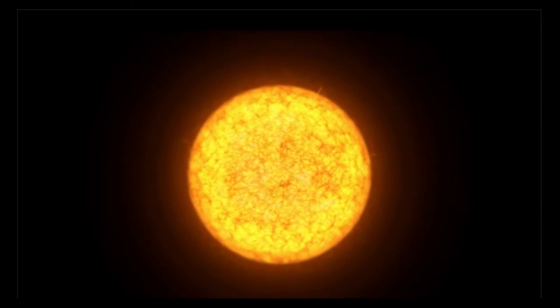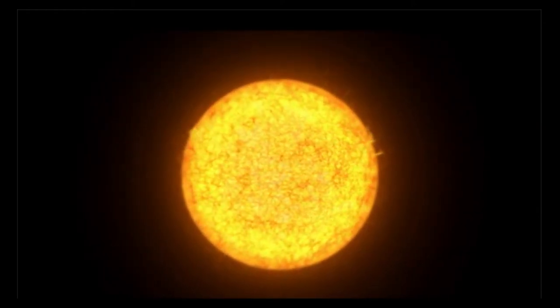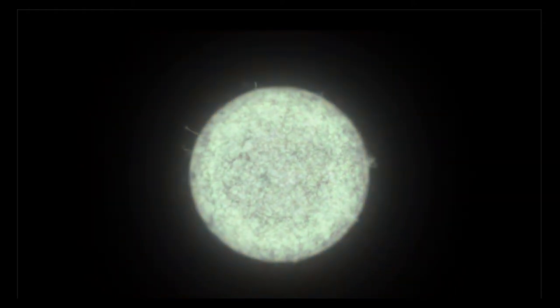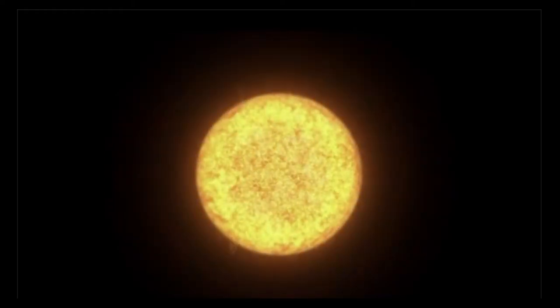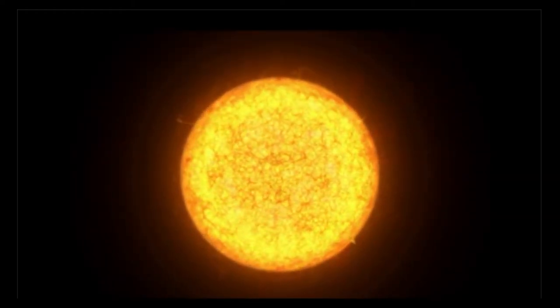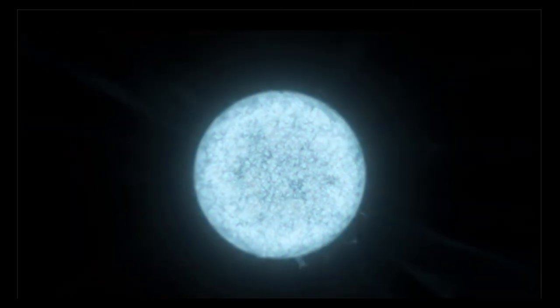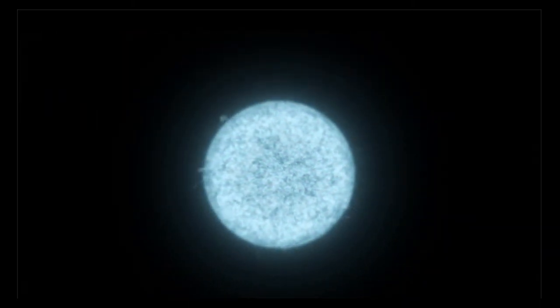Notice it's getting bigger, and now it's getting smaller. These stars cycle on a regular basis, getting bigger and brighter, smaller and dimmer.